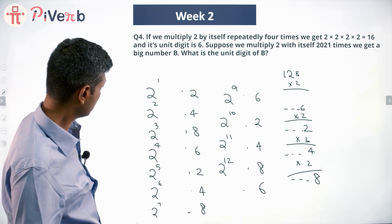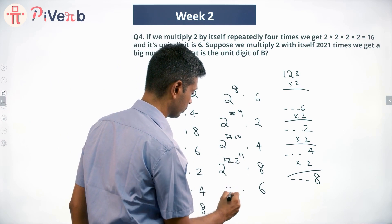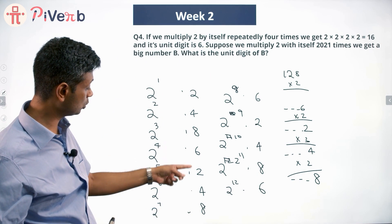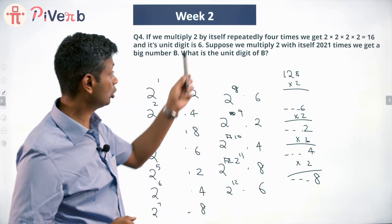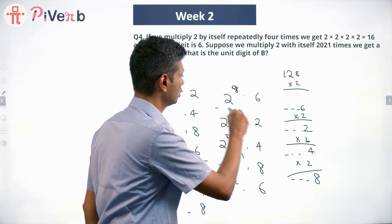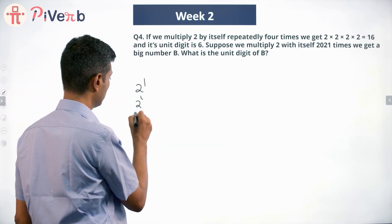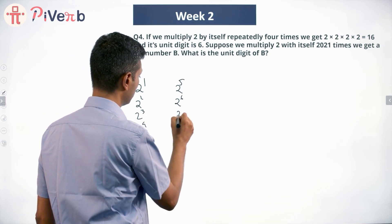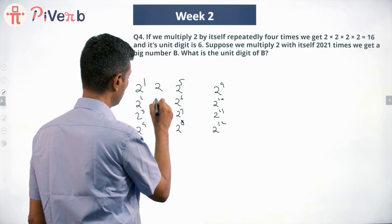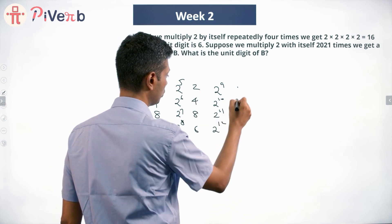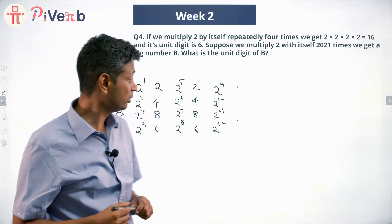Let me correct the labelling: this is 2^8, 2^9, 2^10, 2^11, 2^12. The pattern is very simple: 2, 4, 8, 6, 2, 4, 8, 6, repeating endlessly. Writing them out — 2^1 through 2^12 — the units digits are 2, 4, 8, 6, 2, 4, 8, 6, 2, 4, 8, 6. The pattern repeats in steps of 4. Any multiple of 4 in the exponent will land on the unit digit 6.